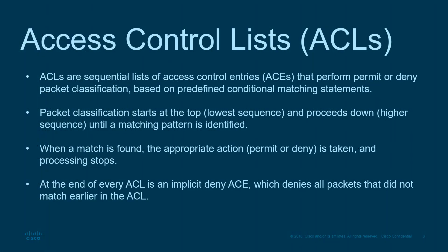ACLs are a list of ACEs — access control entries. These ACEs perform a specific function: they will permit, deny, or remark packets based on a type of classification. This could be based on predefined conditional match statements or an implicit match statement. Packet classification starts at the very top with the lowest sequence number, proceeding to a higher sequence number until a specific match is found. The first match is what applies; everything after it is ignored.